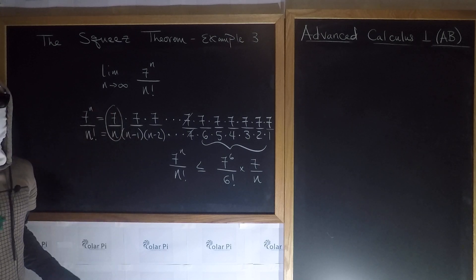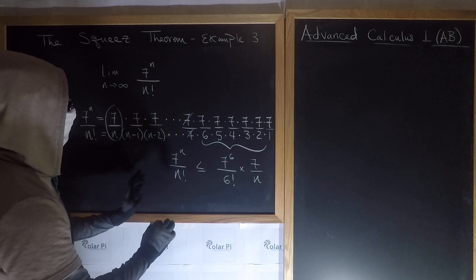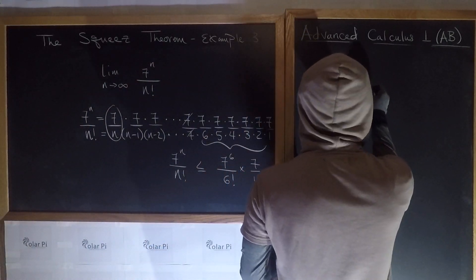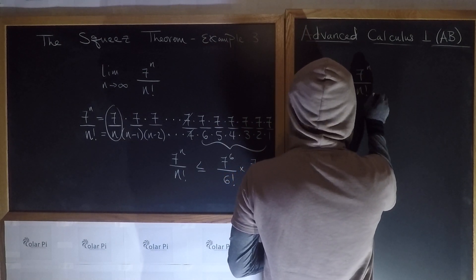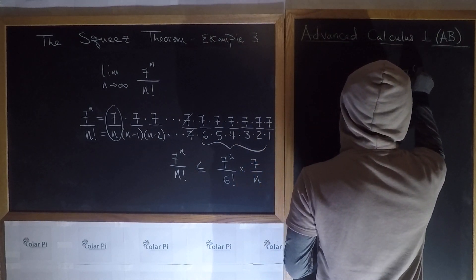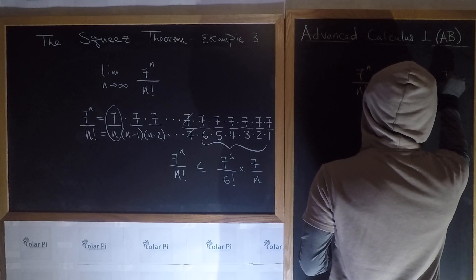So we've now succeeded in finding one way to squeeze 7 to the n over n factorial, at least on the right side. And so let's write that result here. So we see that 7 to the n over n factorial on the right side can be squeezed by 7 to the 6 over 6 factorial times 7 over n.